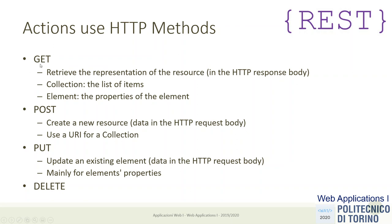The GET method is used for retrieving representations. If you call GET on a collection, it returns the list of items. If you call GET on a URI representing a single element, it returns the properties of that specific element. For example, GET /students returns the list of all students; GET /students/S12345 returns the JSON description of that specific student.